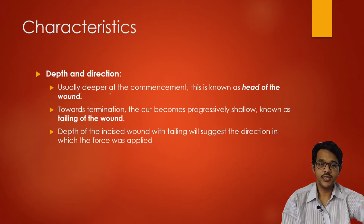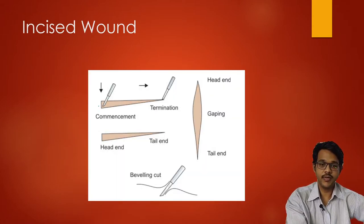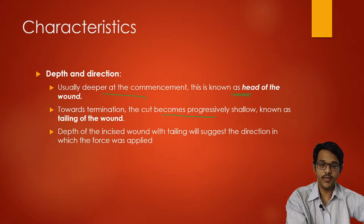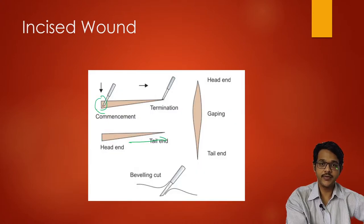Depth and direction: incised wounds are usually deeper at the commencement — called the head of the wound — and toward termination the cut becomes progressively shallow, known as the tailing of the wound. The depth of the incised wound with tailing will suggest the direction: where it is deep is the head, and where it becomes shallow indicates the end direction of the incised wound.